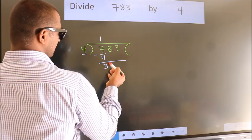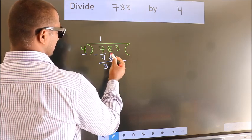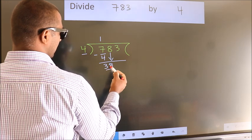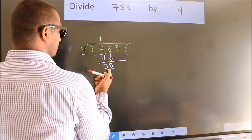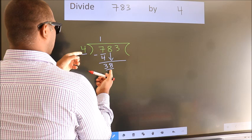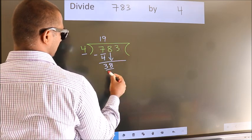After this, bring down the beside number. So, 8 down. So, 38. A number close to 38 in 4 table is 4 nines 36.